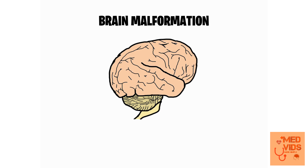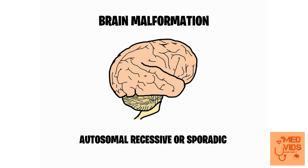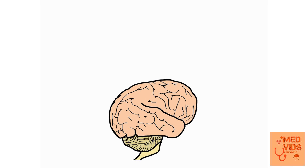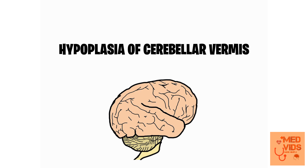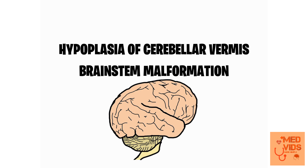Schubert's syndrome is a syndrome characterized by brain malformations. It is mostly autosomal recessive, but sporadic cases are also seen. The brain malformations seen in Schubert's syndrome include hypoplasia of the cerebellar vermis and brainstem malformation. The clinical features of Schubert's syndrome are mostly because of these two malformations.